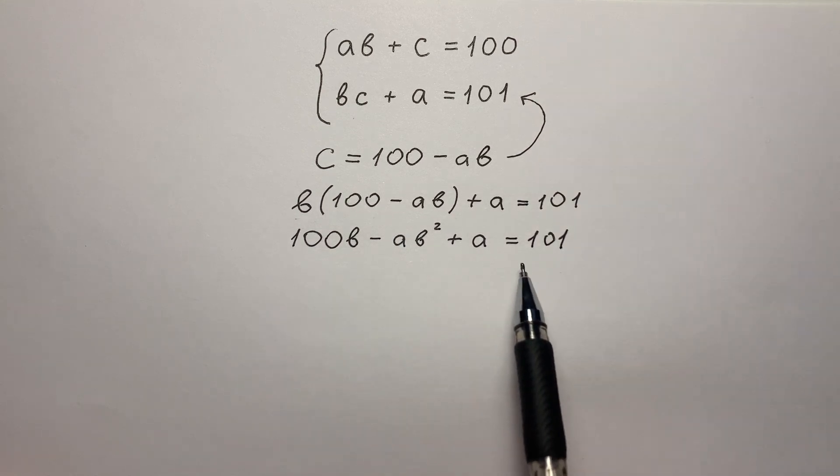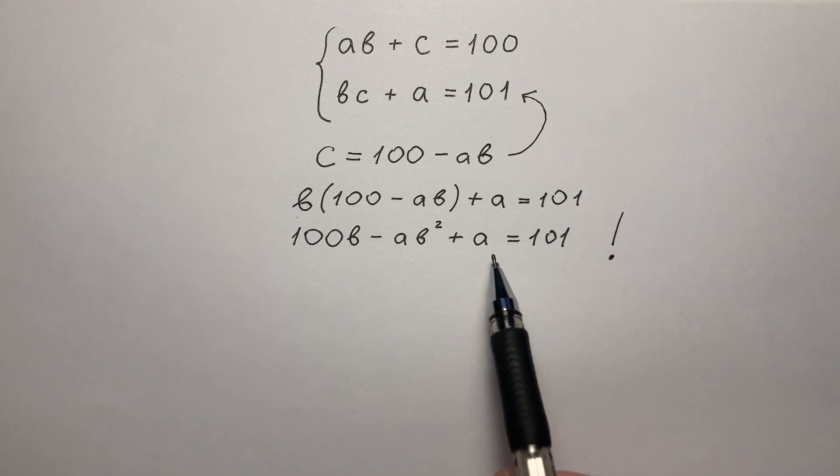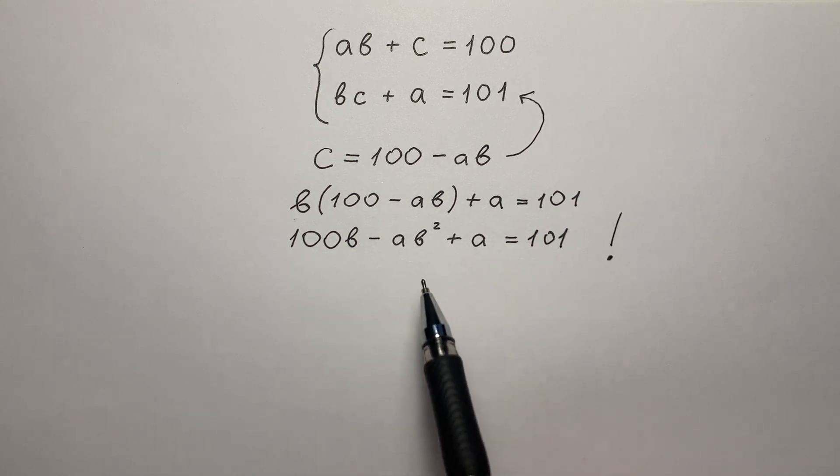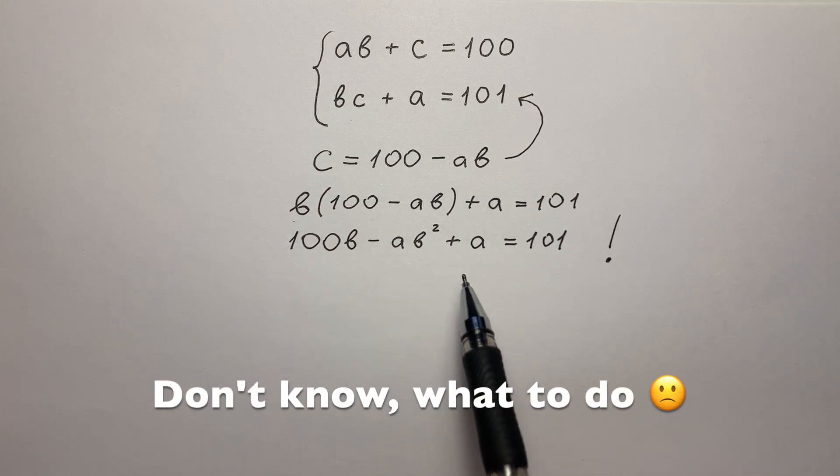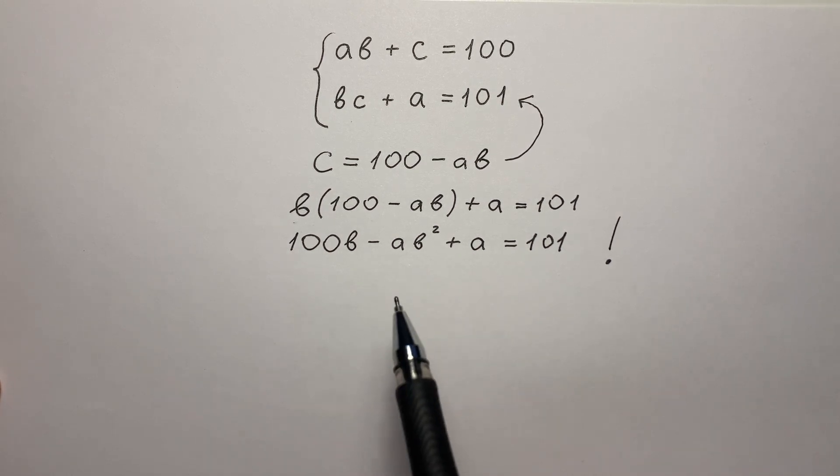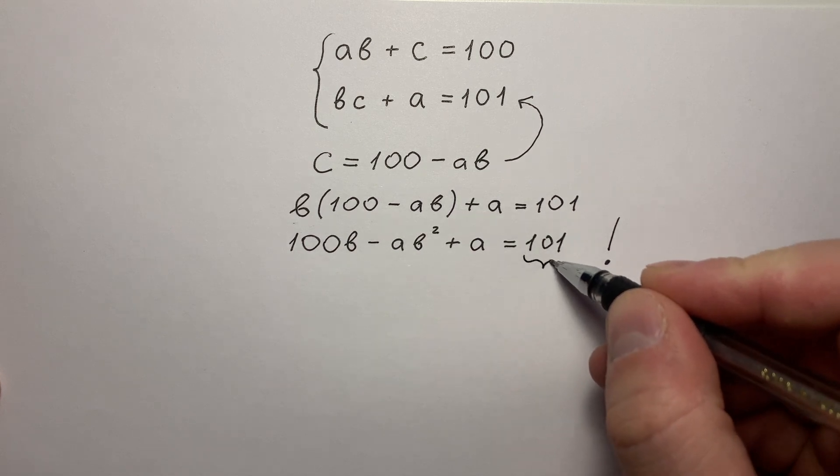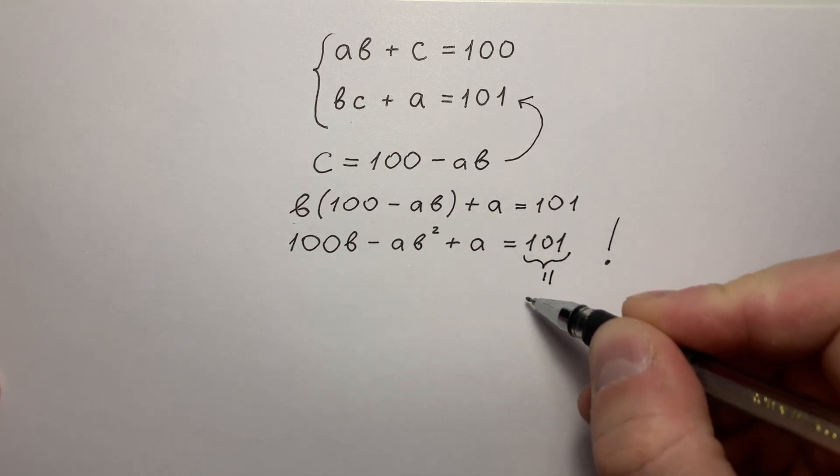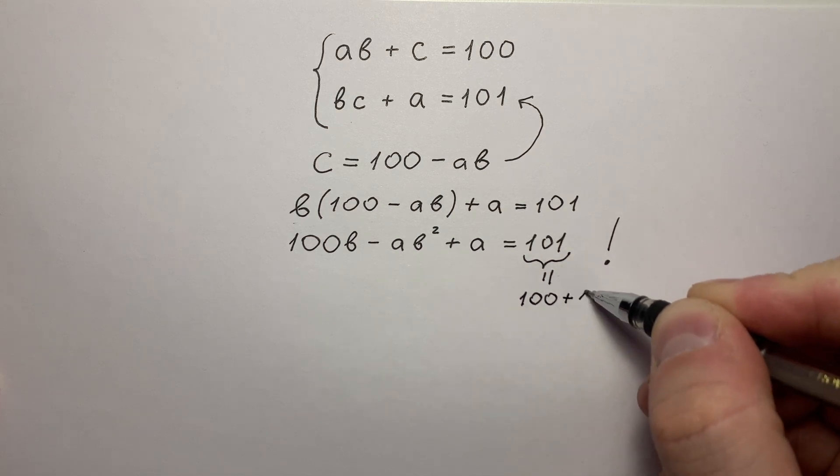And here is a very important moment. Lots of students approach this moment of solution. But from this point most of them don't know what to do next. And here is a very interesting trick that most students miss. Let's try to write 101 like 100 plus 1.